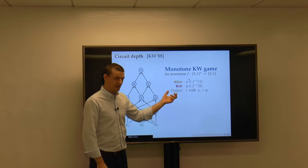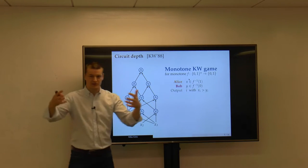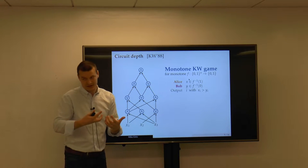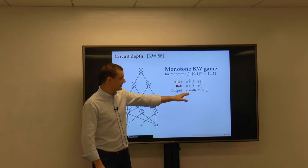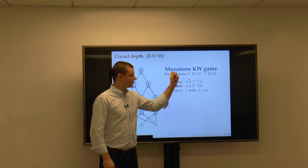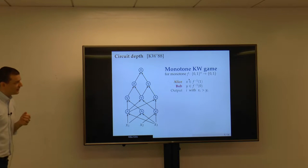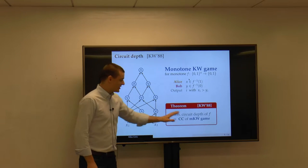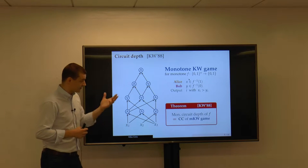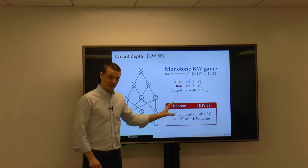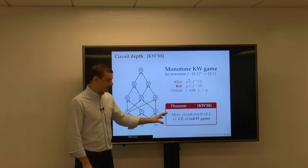You fix your favorite monotone function and consider the following communication game between Alice and Bob. Alice is given a yes-input of the function and Bob is given a no-input. They must differ somewhere, and for a monotone function they must differ positively somewhere — there must be a coordinate where Alice has a one and Bob has a zero. The communication search problem is: on these inputs, find such a coordinate with the least amount of communication. Karchmer-Wigderson showed that the deterministic communication complexity of this game exactly captures the monotone circuit depth.